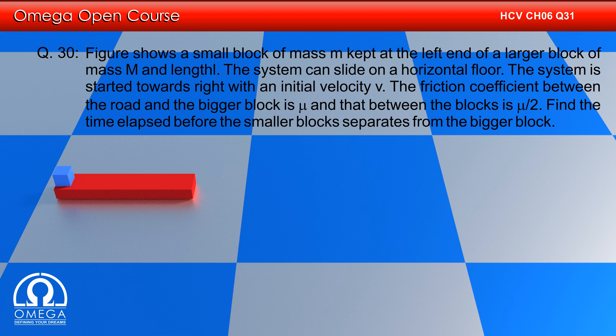A small block of mass m is kept at the end of a larger block of mass M and length L. The system can slide on a horizontal surface. The system is started towards right with an initial velocity v. The friction coefficient between the floor and the bigger block is μ, and that between the blocks is μ/2.